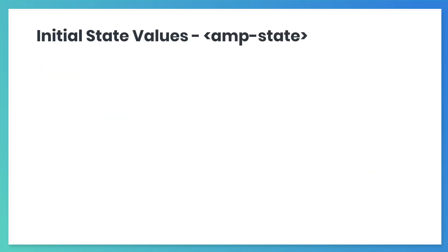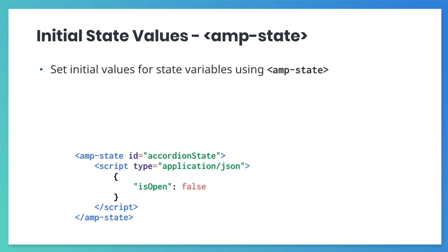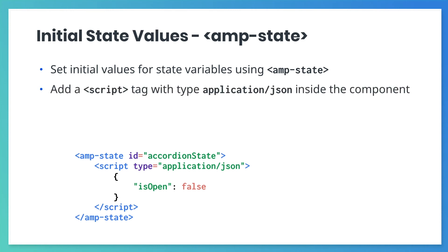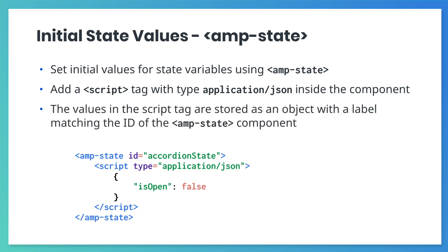You can also set initial values for your state variables. To do this, just add an amp-state component to your page. The ID attribute is required. Inside this component, you add a script tag. This tag needs a type attribute set to application/JSON. And then inside the script tag, you add a JSON object. When your site loads, a state variable with that name is assigned that JSON object.